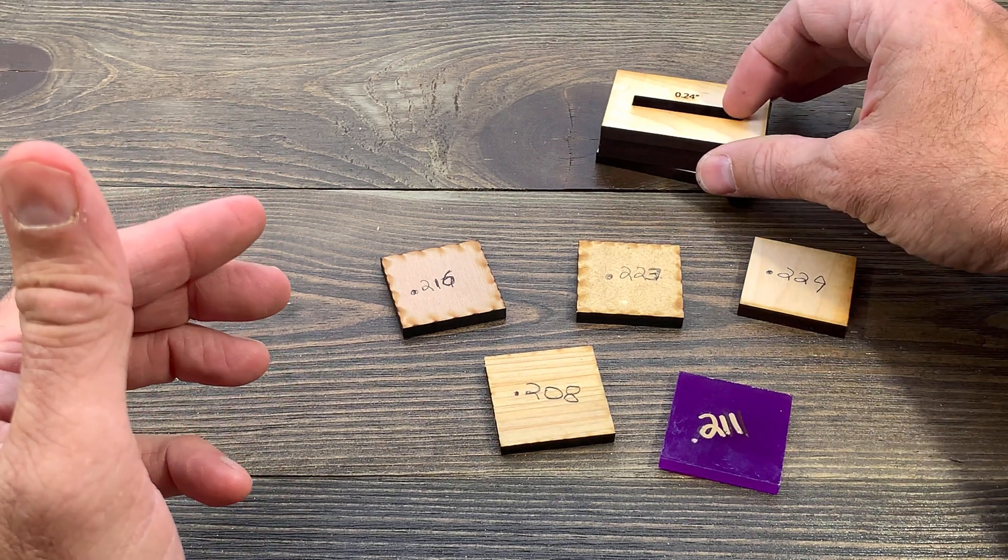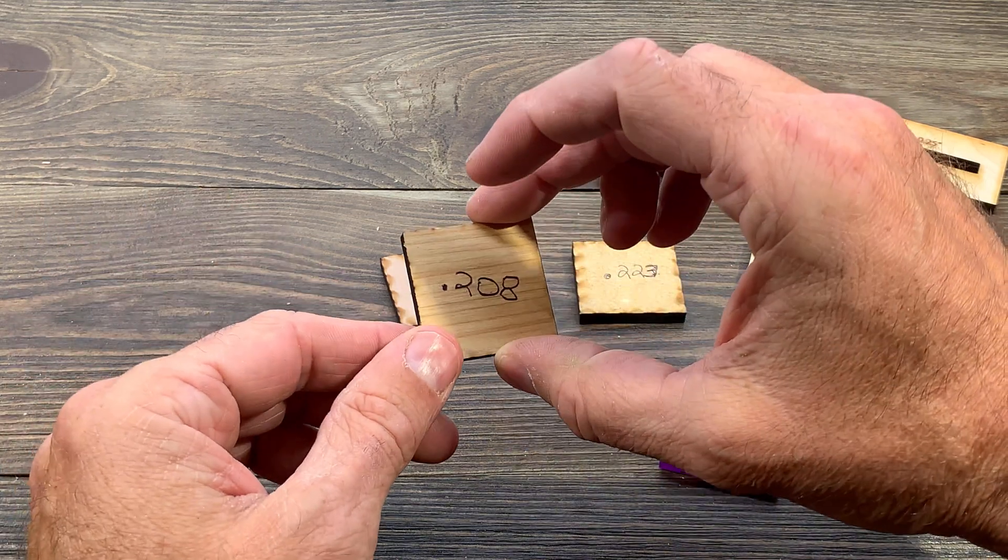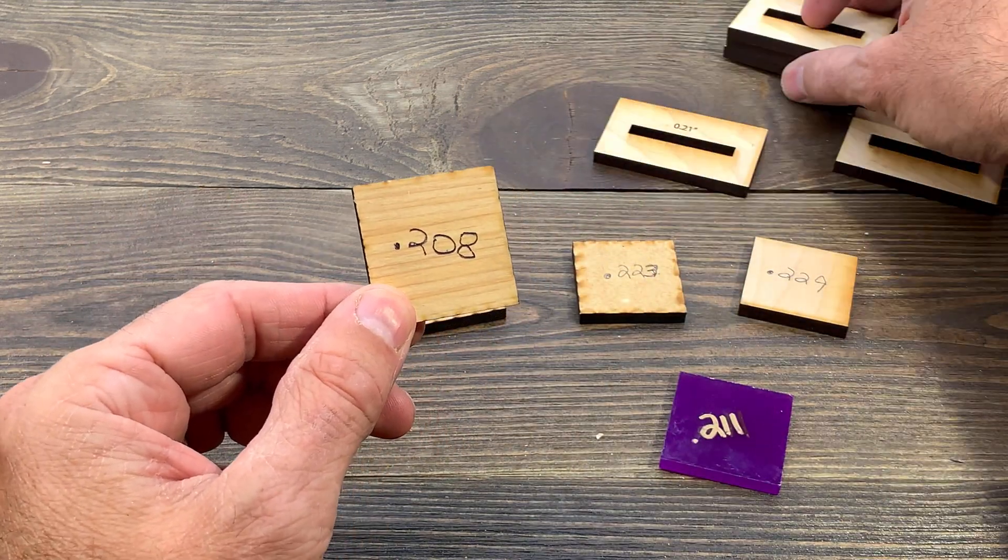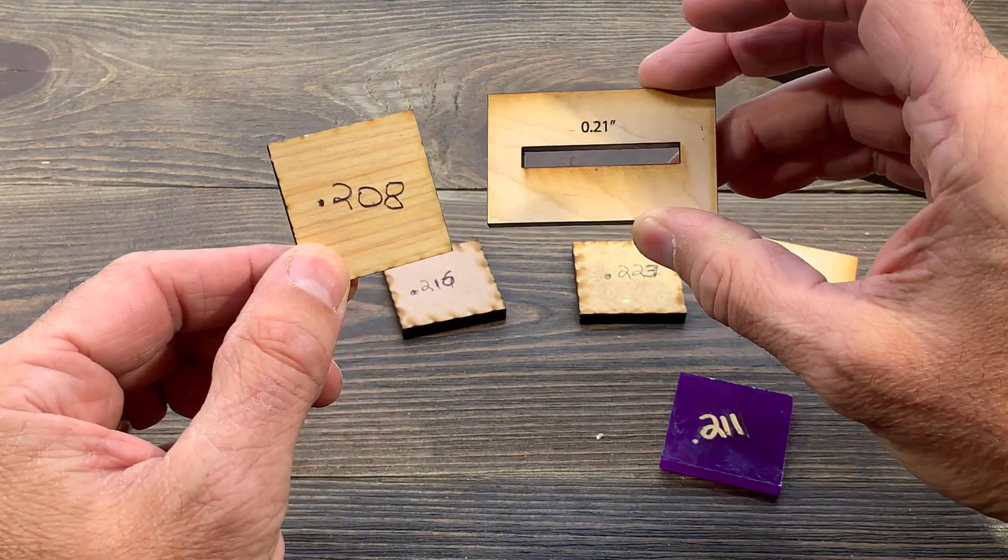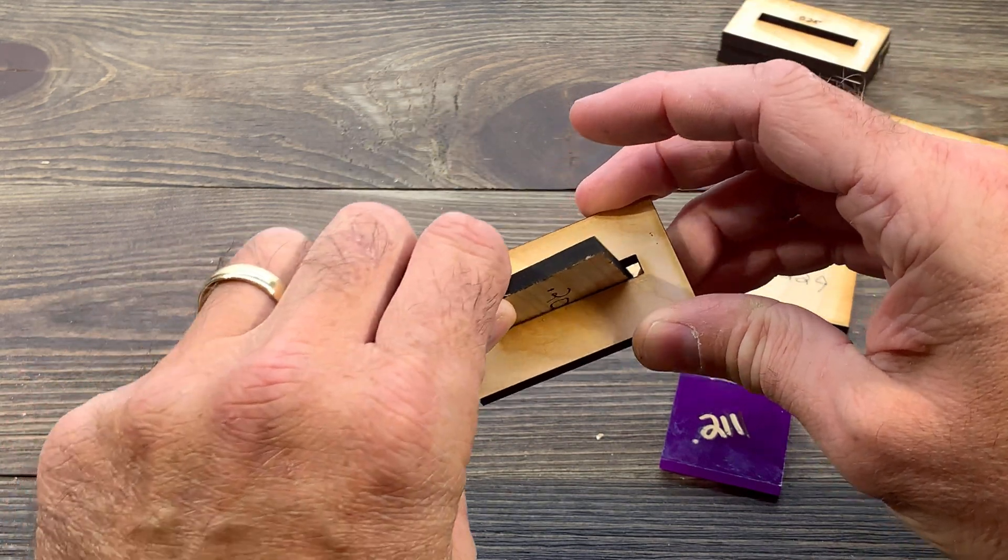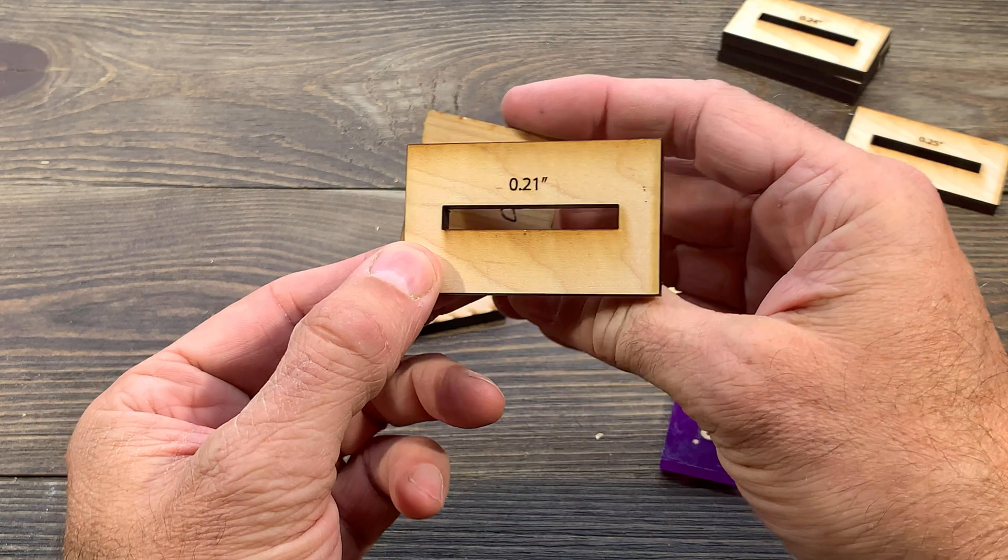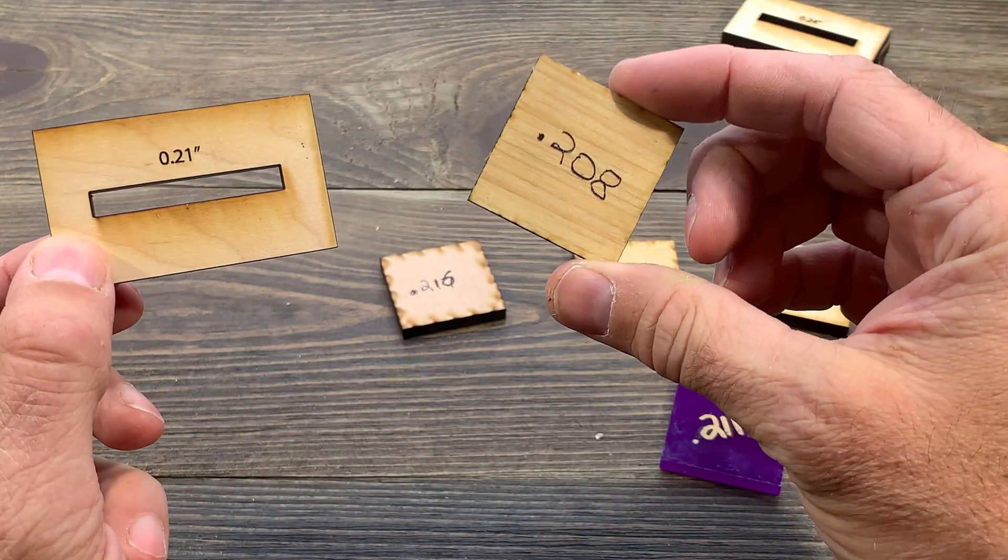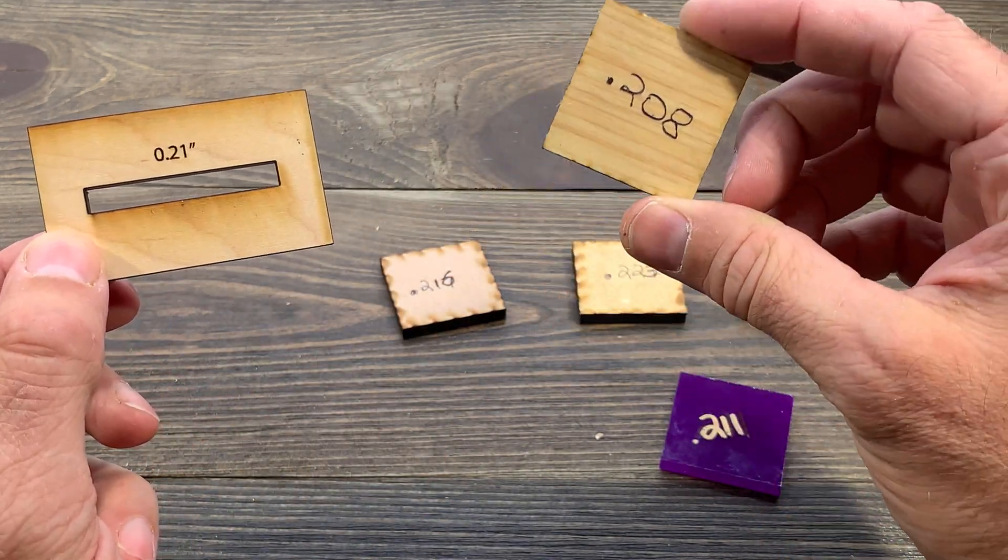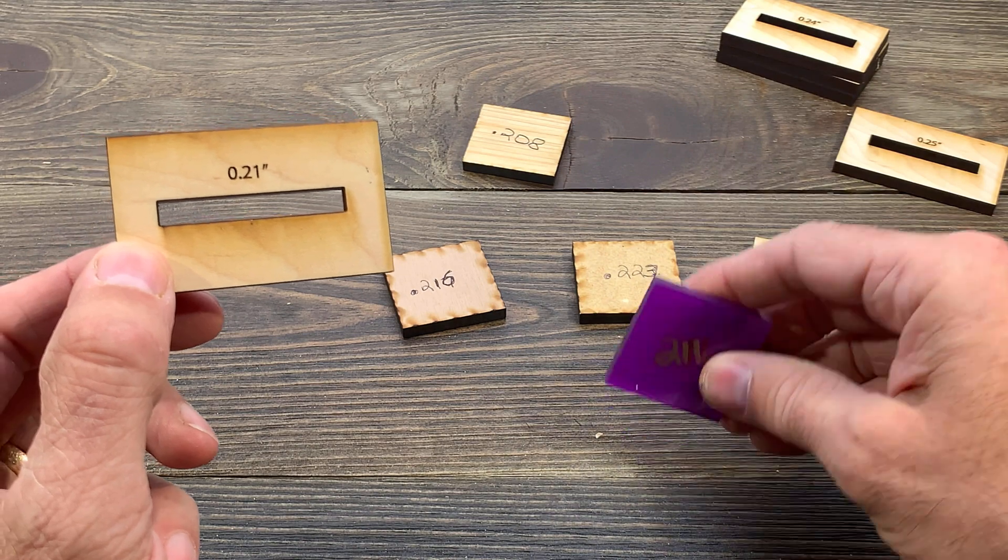Let me just keep going forward here for just a second. So for example, you see this 0.208. If I go all the way down to a slot that is 0.21, you see that it still falls all the way through real easily. So this was sold by a supplier as quarter-inch.